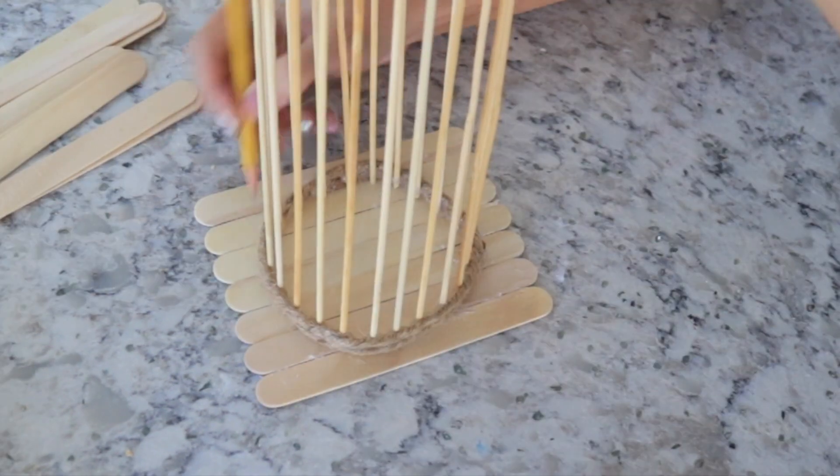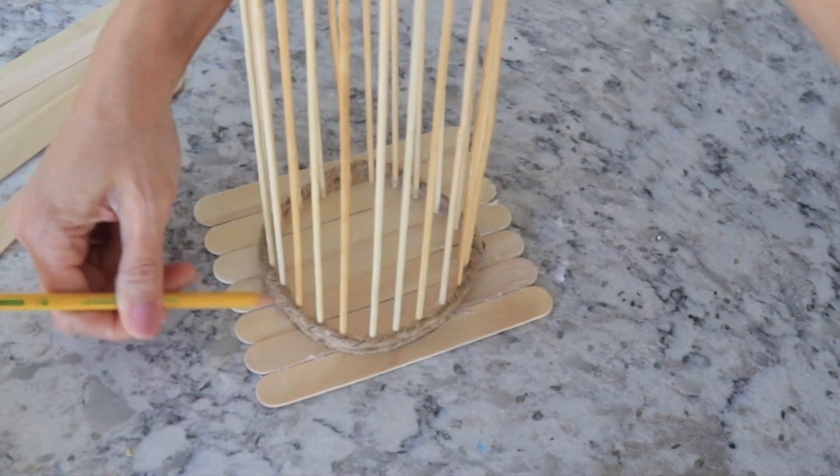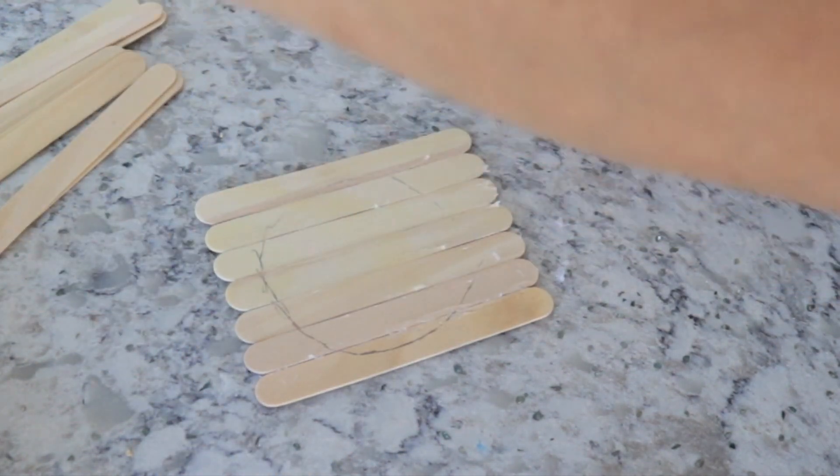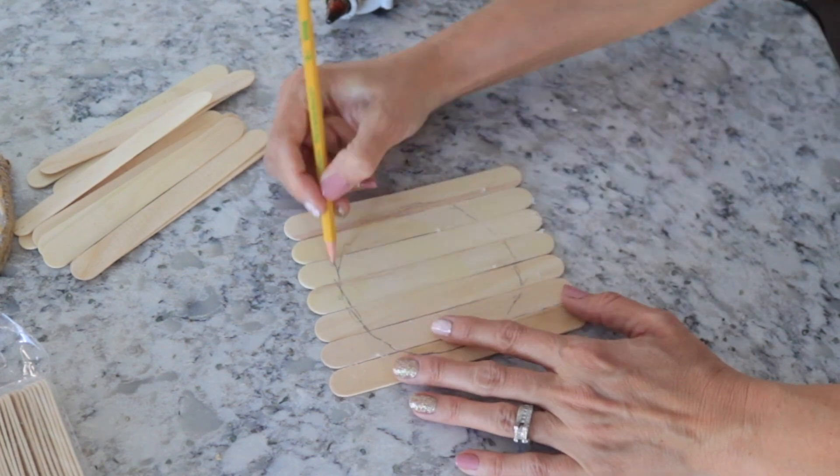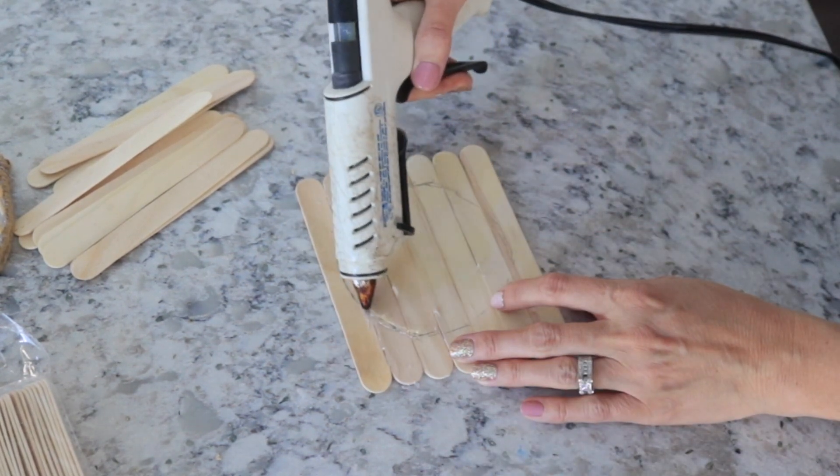Once I did get it in there, I did go ahead and trace it with my pencil, just so I could kind of get an idea of where I wanted to glue it because the actual lantern was kind of flimsy. So I drew this out and then I just went ahead and glued the lantern to the base.